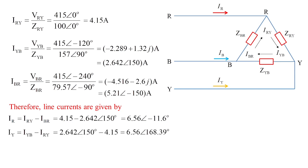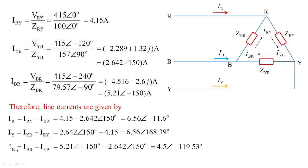Similarly, I_Y is 6.56 at angle 168.39 degrees amperes, and I_B is 4.5 at angle minus 119.53 degrees amperes. This is how we calculate the line currents for the given delta network problem.